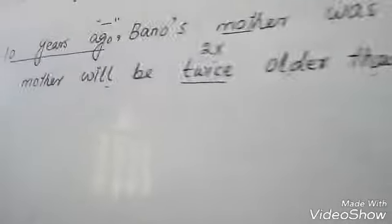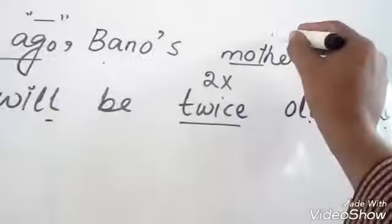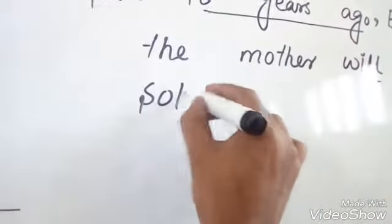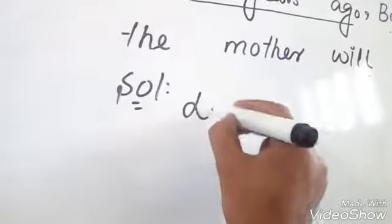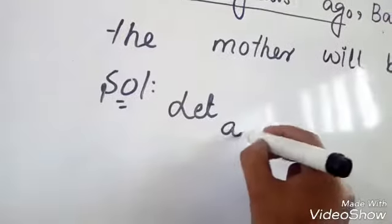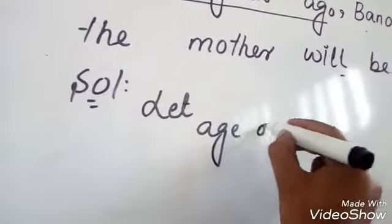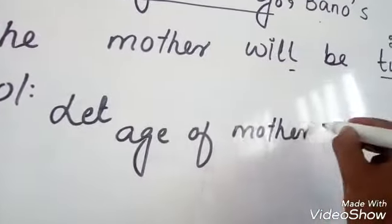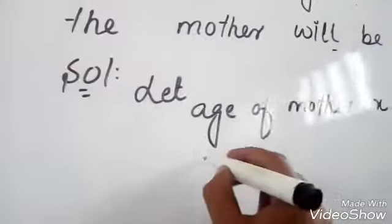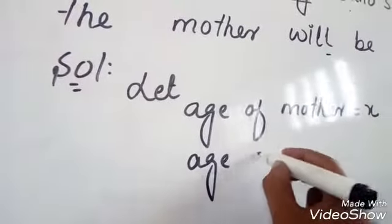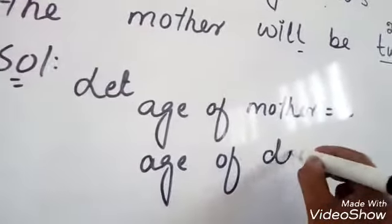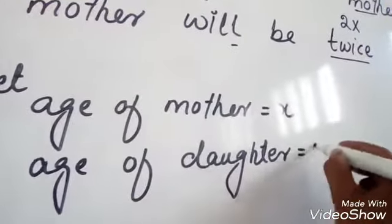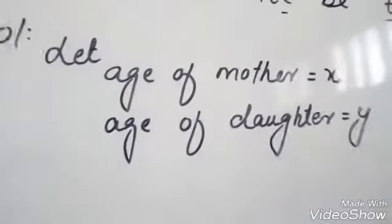First of all, let the age of mother be X, and the age of daughter — that is Banu — be Y.